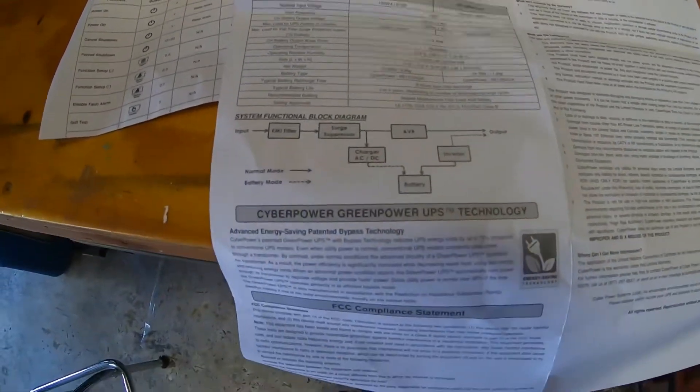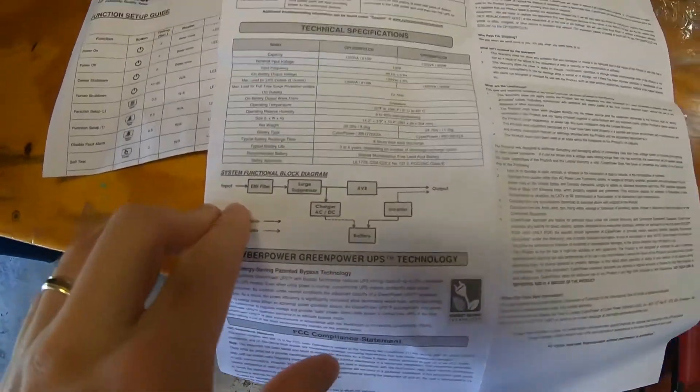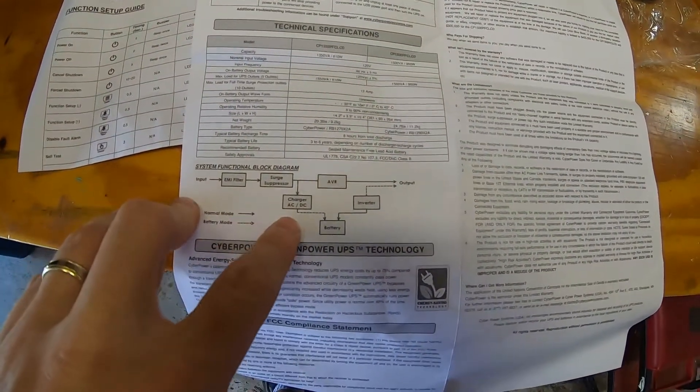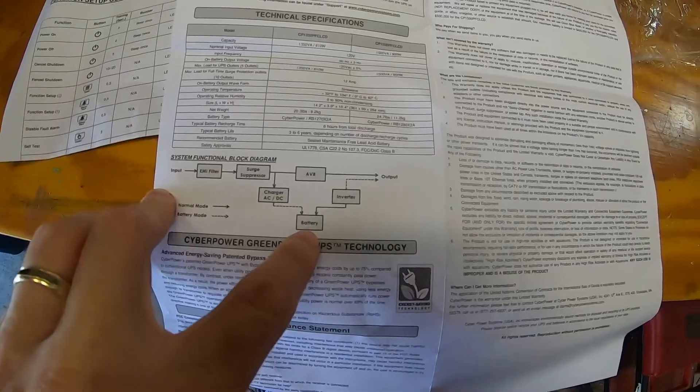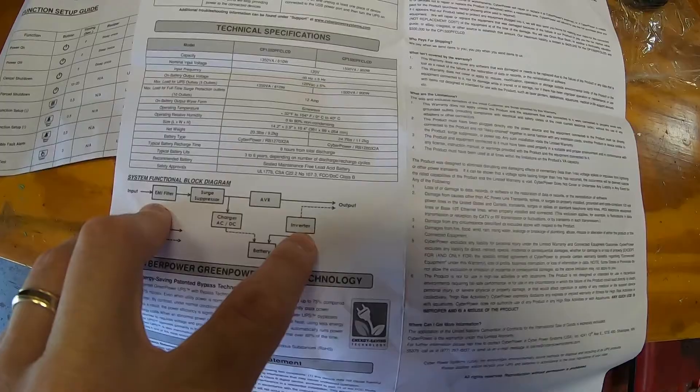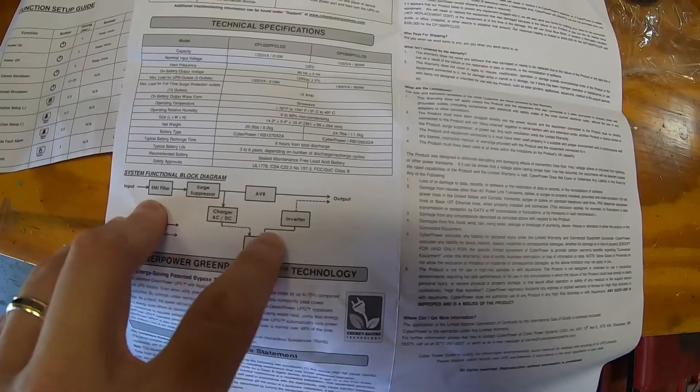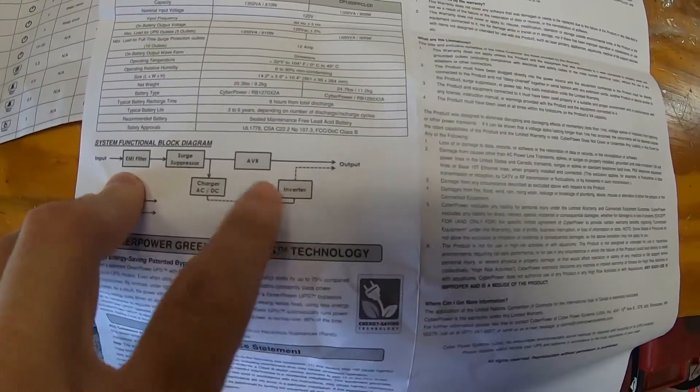And here's a block diagram here. So you have your input. An EMI filter. Surge suppression. To the charging circuit for the battery. And then for the inverter. So I guess this is really what you're paying for to get your true sine wave output.